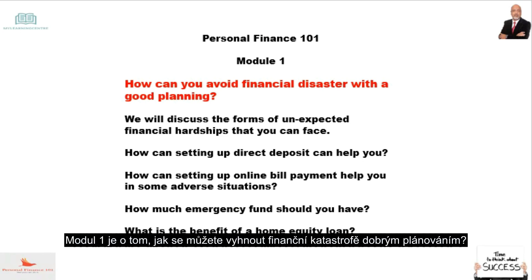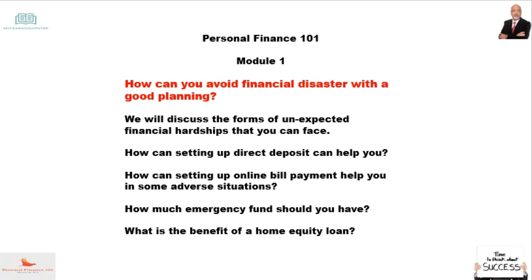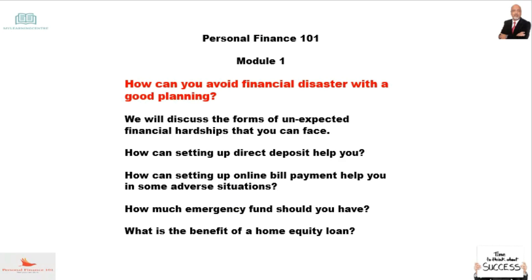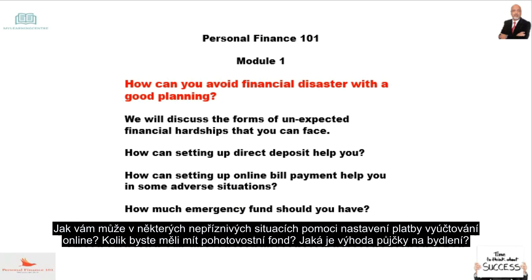Module 1 is about how you can avoid financial disaster with good planning. We'll talk about forms of unexpected financial hardships that you can face, how setting up direct deposit can help you, how setting up online bill payments can help you in adverse situations, how much emergency fund you should have, and the benefit of a home equity loan.